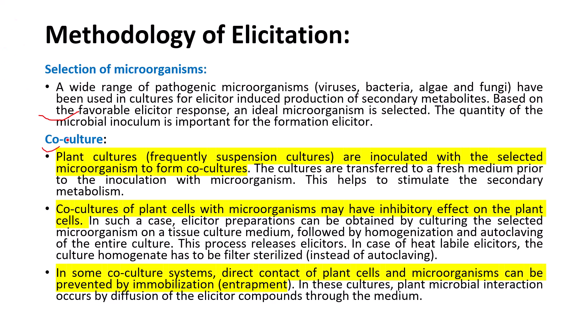Co-culture can occur in three forms. First, plant cultures are directly inoculated with the selected microorganism; cultures are transferred to fresh medium prior to inoculation, which stimulates secondary metabolism. Second, if the co-culture has inhibitory effects on plant cells, elicitor preparation can be obtained by culturing the microorganism separately on tissue culture media, followed by homogenization and autoclaving of the entire culture to isolate the elicitor moiety. For heat-labile elicitors, the culture homogenate must be filtered and sterilized.